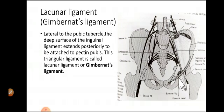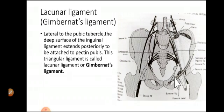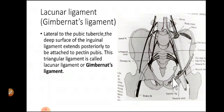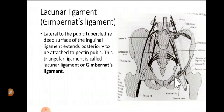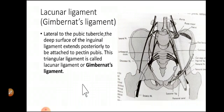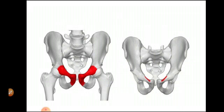To reduce a femoral hernia we may have to cut the lacunar ligament, so it is important to know it. Sometimes an abnormal obturator artery may be present in this region, so we have to be careful about that also.